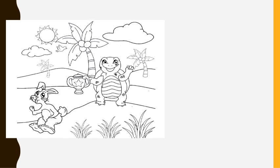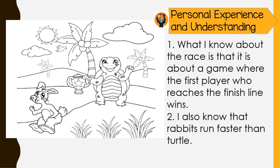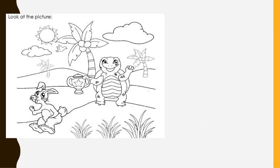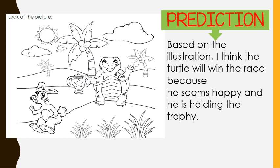Now, let us do the second step. Write some personal experiences and understanding about the picture. What is your prior knowledge about the picture? First, what I know about the race is that it is about a game where the first player who reaches the finish line wins. Second, I also know that rabbits run faster than turtles. What is now our prediction? Based on the illustration, I think the turtle will win the race because he seems happy and he is holding the trophy.